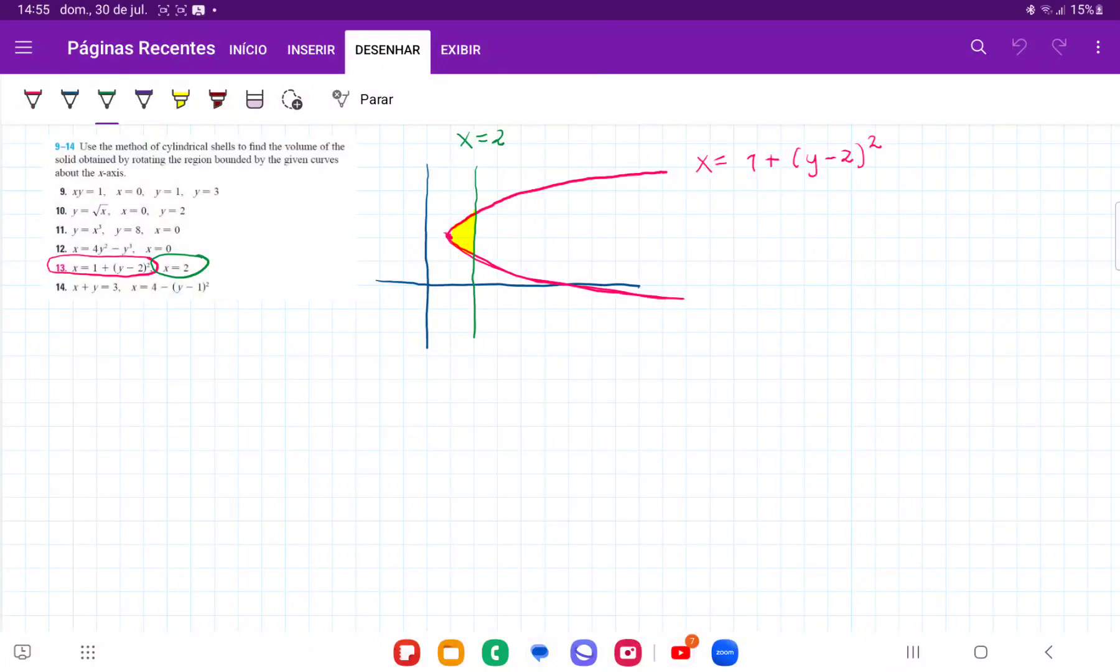So for number 13, they want us to take the area bounded between these two curves and revolve it about the x-axis. I've drawn these two curves, and the first thing we need to do is find where they intersect, because we need to know the boundaries.